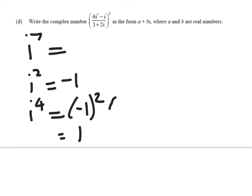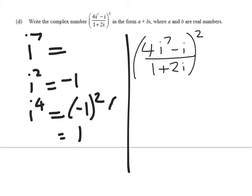And i to the power of 7 is going to take up the basis of the power of 4. So here we've got 4i to the 7 minus i over 1 plus 2i squared. We'll clean up that top line before we do anything else.